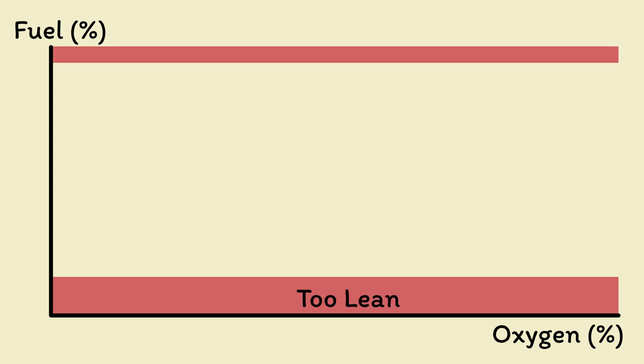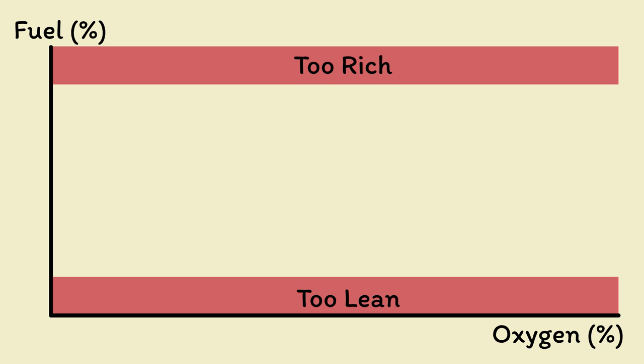Likewise, if you have too much hydrocarbon gas, we say it's too rich. We're left with this area in the middle. So next, we come to the oxygen content.